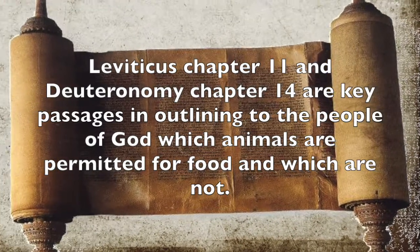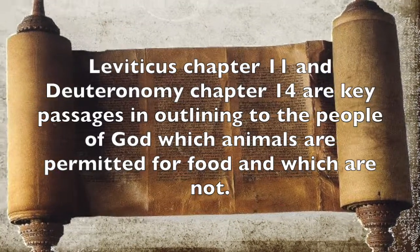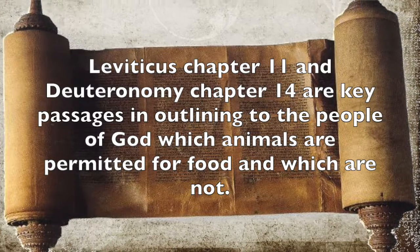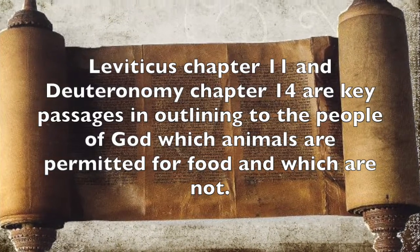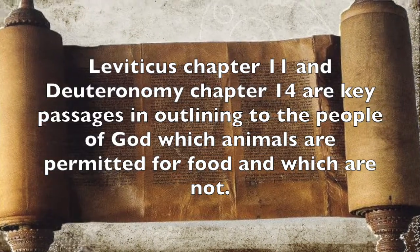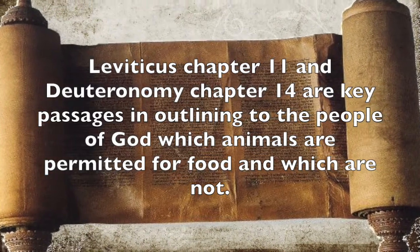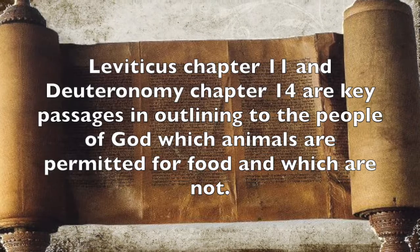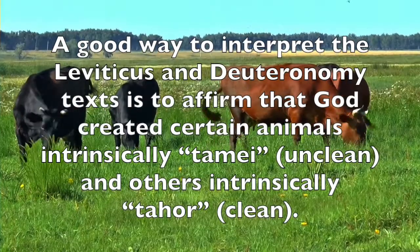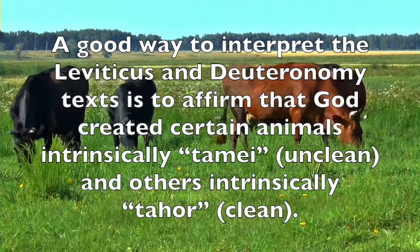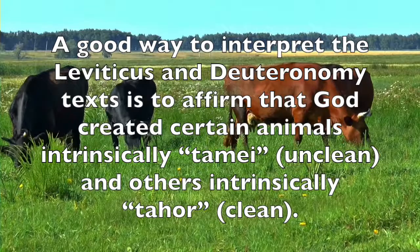Leviticus chapter 11 and Deuteronomy chapter 14 are key passages in outlining to the people of God which animals are permitted as food and which are not. We're actually going to exegete chapter 11 in the longer study. Tonight is a good way to interpret the Leviticus and Deuteronomy texts.